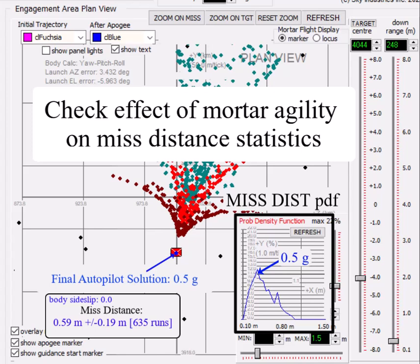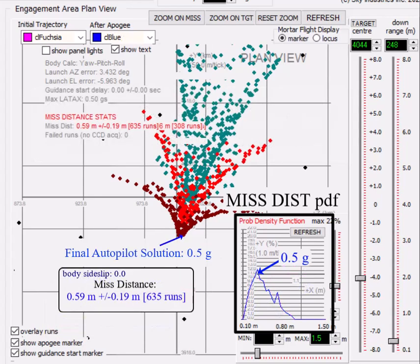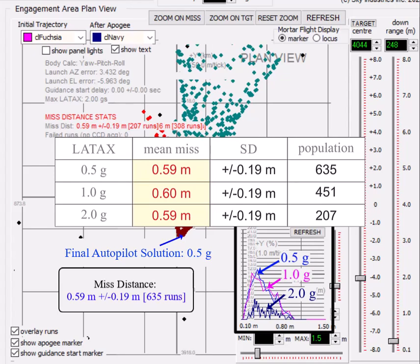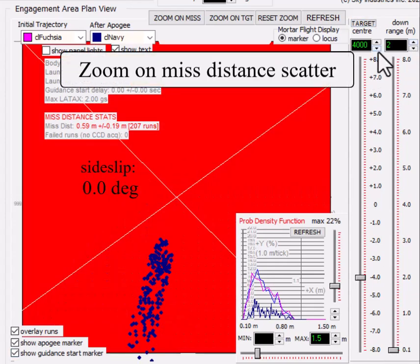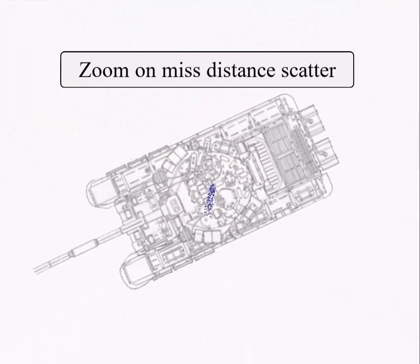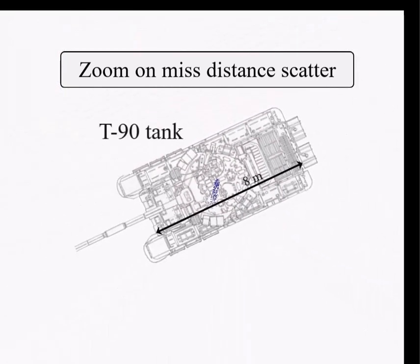I looked at how the distribution of hits changes as the mortar maximum lateral acceleration is changed from half a G to 1 G to 2 G's. I think the half a G case is realistic, but it's interesting that all three are basically the same. The mean missed distance is about 0.6 meters and the standard deviation is about plus or minus 0.2 meters. I also added a feature to zoom on the hit points relative to the target center, which in this case is a Russian T-90 tank, about 8 meters long by 6 meters wide.